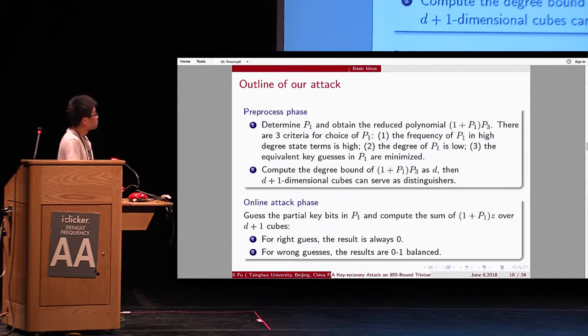So, in the processing phase, we have to determine p1. There are three criteria for the choice of p1. So, the first is the frequency of p1 in the high degree state terms. It must be high. And the degree of p1 is low. And the equivalent k bits in p1 are minimized. So, suppose we compute the degree of the polynomial is d. Then d plus 1 could be served as a distinguisher.